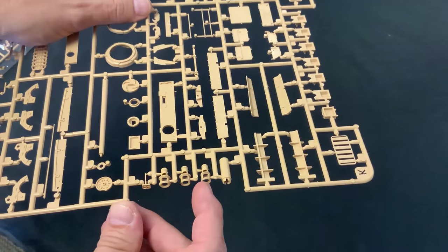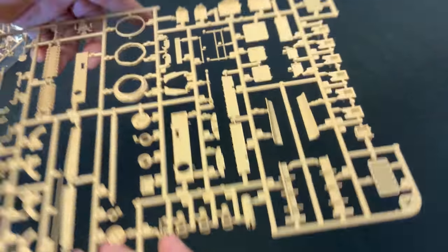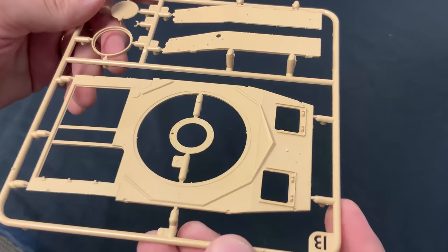Once again, all these muzzle brakes, which they give you quite a few in this kit, are all slide molded. And lastly for the big sprues is the upper hull.